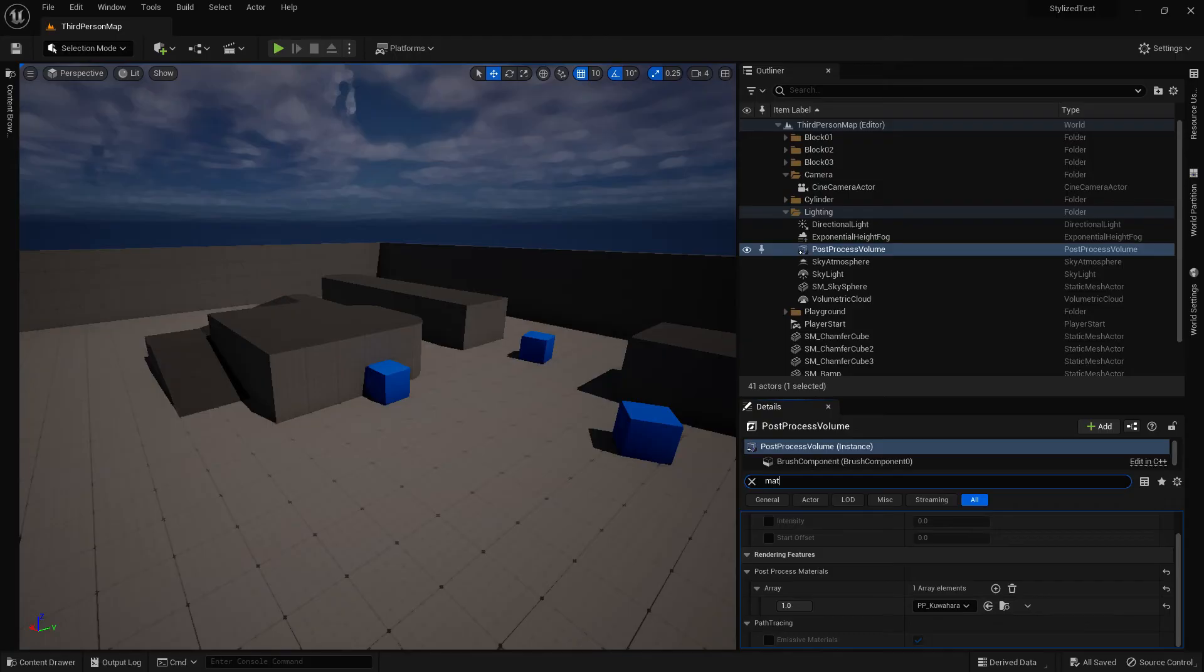Once the material is created, add a post-process volume actor into your scene, add a post-process material reference and put the material you created there. You can disable the filter effect by changing the value at the left side to 0.